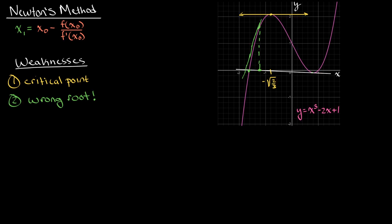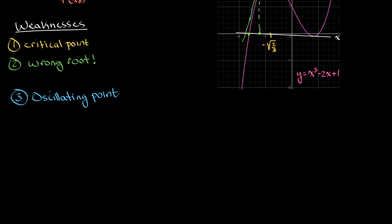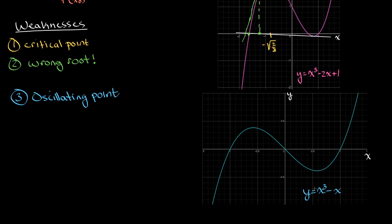Another weakness is called an oscillating point. Graphically, consider the function y = x³ − x. The oscillating point is a situation where we pick an initial guess, apply Newton's method, and the tangent line's x-intercept lands somewhere else — but when we apply Newton's method there, it comes right back to our original initial guess. It keeps oscillating between the same two points over and over, never progressing toward a root, getting stuck in this cycle.